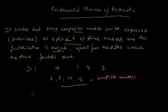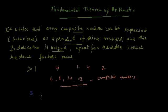Similarly, a prime number is any positive integer greater than 1 which has no factor other than 1 and itself. For example, the number 3 has only 2 factors: 1 and itself (3). So 3 is a prime number.